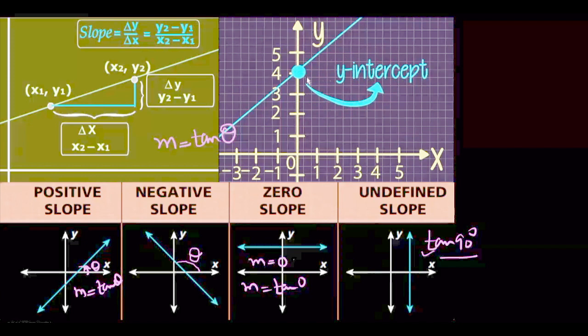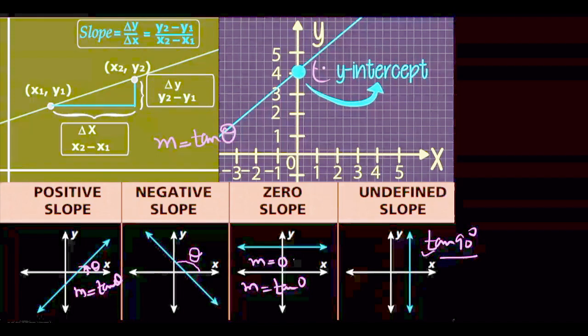What is y-intercept or x-intercept? Y-intercept is the point on y-axis, and x-intercept is the point on x-axis.